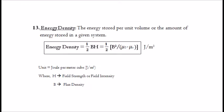13. Energy density. The energy stored per unit volume, or the amount of energy stored in a given system. It is given by: energy density equals half·B·H, which is equal to half · B² divided by (μ₀·μᵣ). The unit is joules per meter cubed, where H is the field strength or field intensity and B is the flux density.